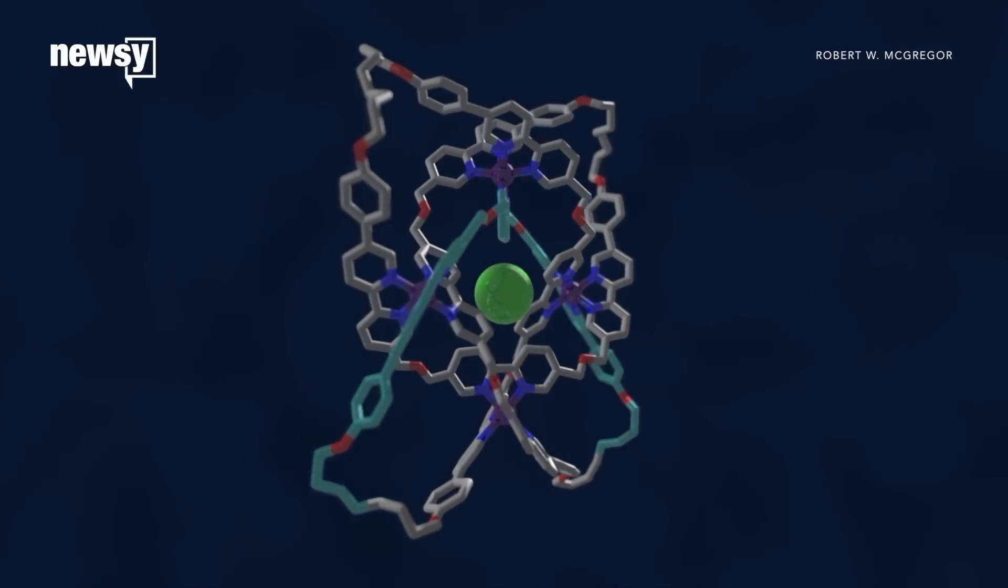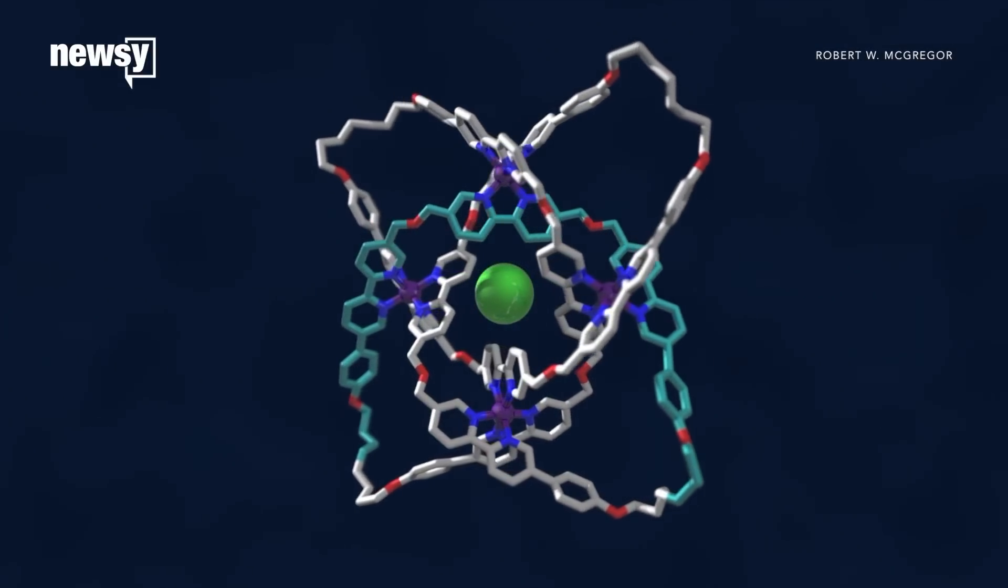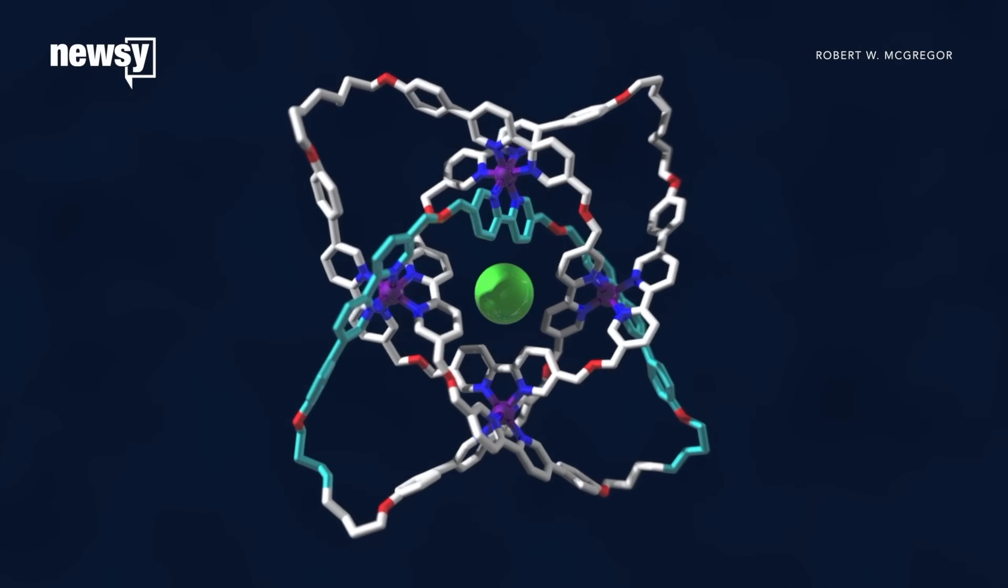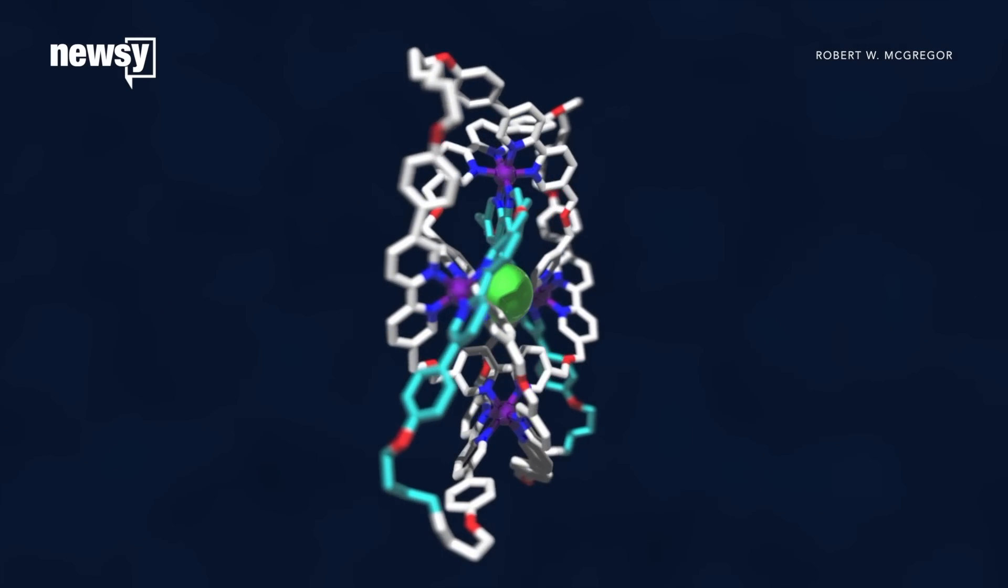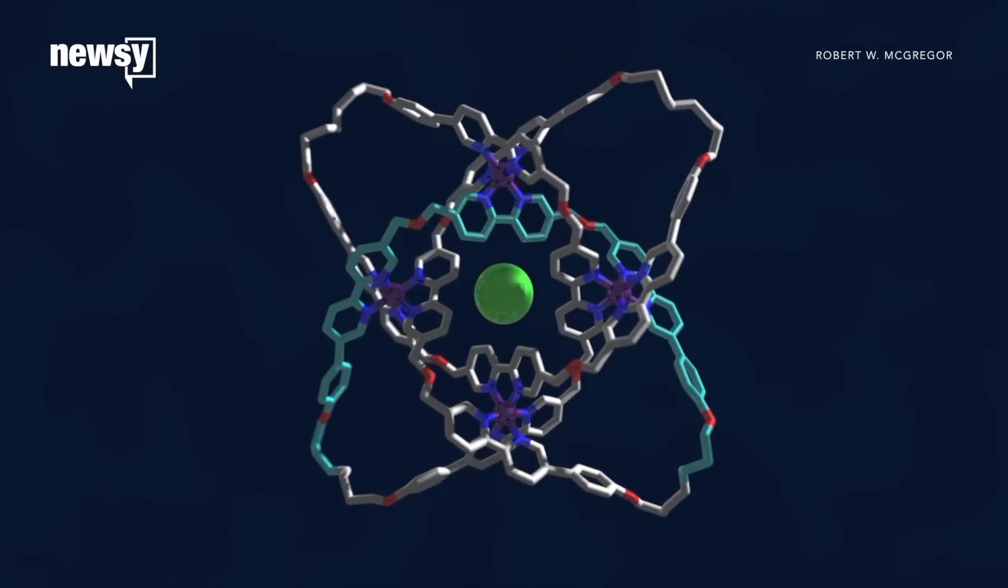This is the tightest knot ever. It has eight crossings and a chain just 192 atoms long, but it doesn't have loose ends like a knot in a rope. The strands are wrapped around a metal ion and sealed in a closed loop.